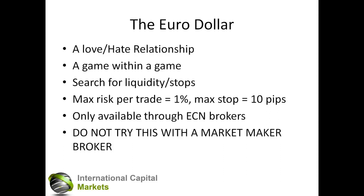My idea of scalping — and this isn't probably in sync with a lot of people out there — is a maximum risk per trade of 1% and a maximum stop distance of 10 pips per trade. When I trade intraday and scalping, 10 pips is my absolute maximum risk. My average loss works out to be around 4–5 pips and my average gain would be close to 10, so it's just over 9. That means my average win is twice my average loss, which means I only have to get half my trades right — actually less than that — to make money.